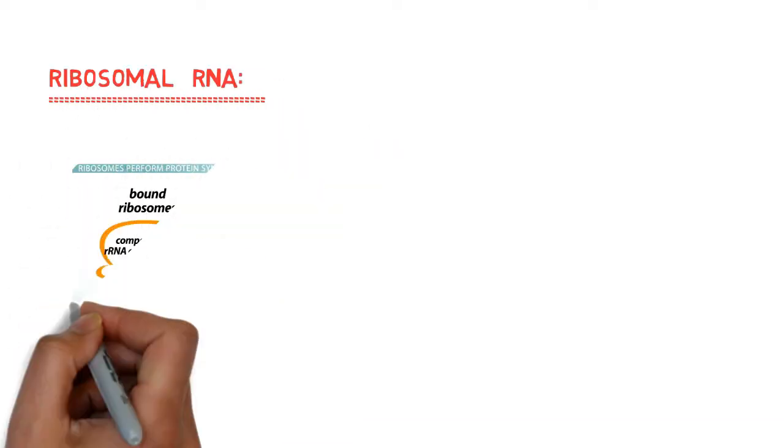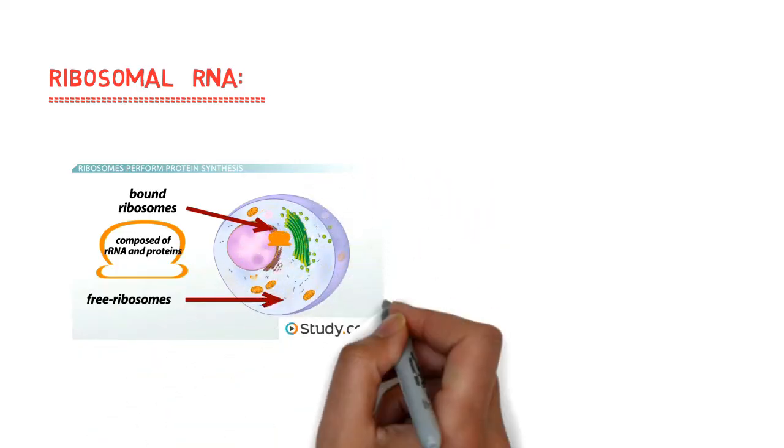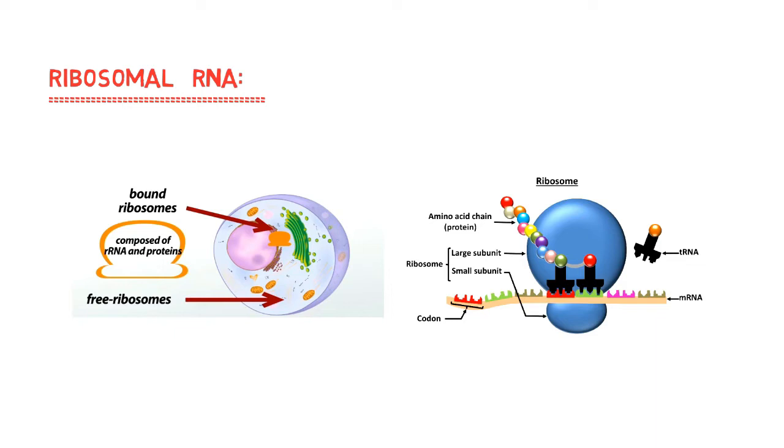Next, ribosomal RNA is synthesized in the nucleus, but is mostly found in the cytoplasm, in ribosomes. Ribosomes are composed of ribosomal RNA and proteins. It is involved in the translation of messenger RNA. Along with the transfer RNA, it prepares proteins.